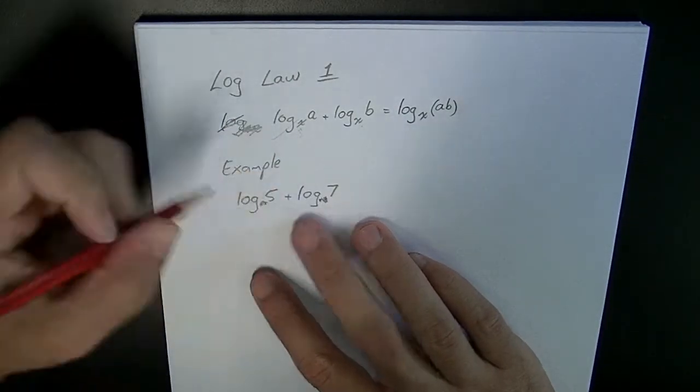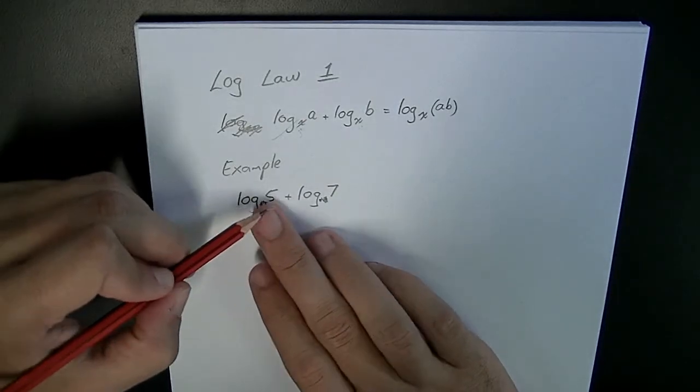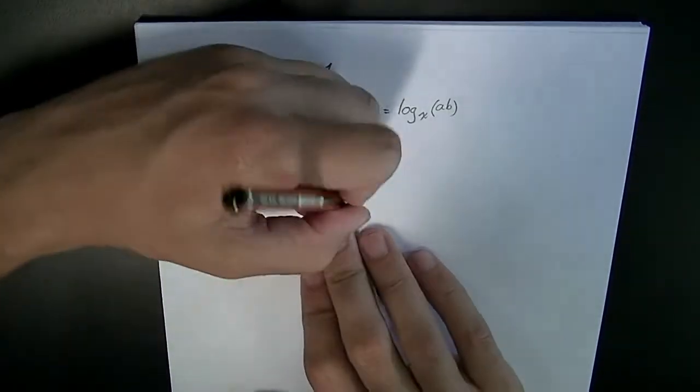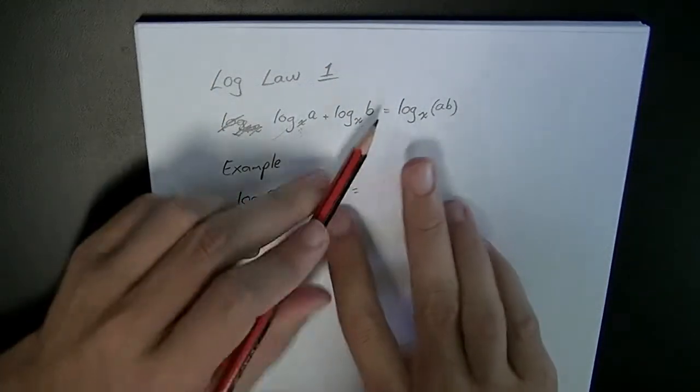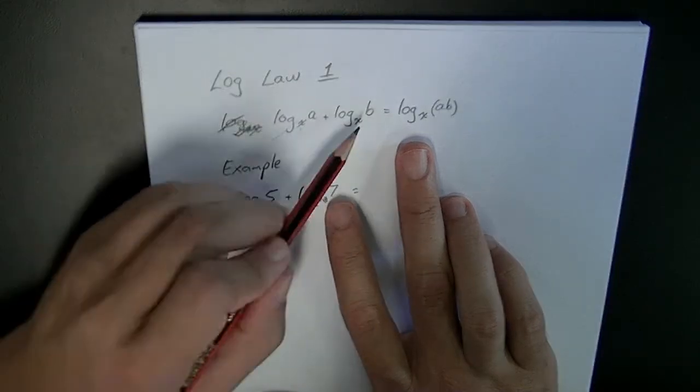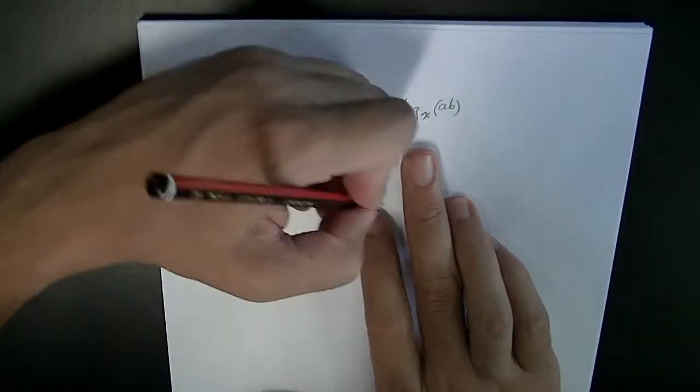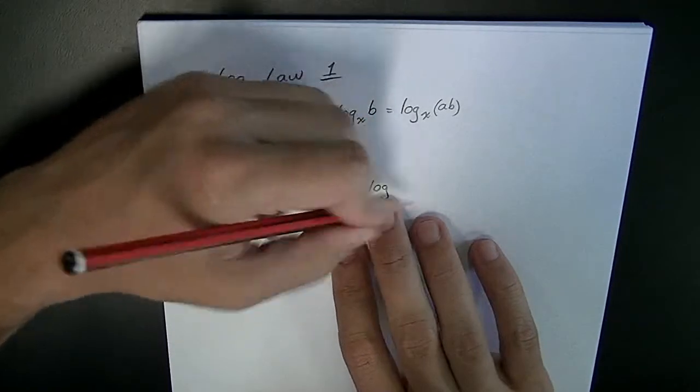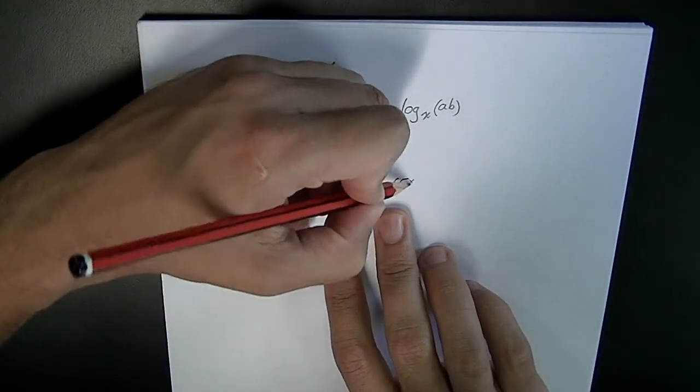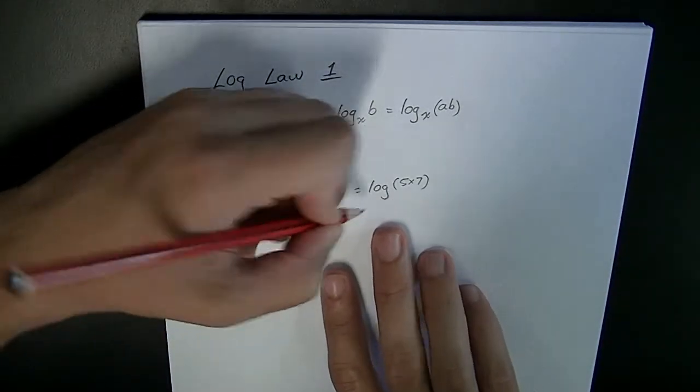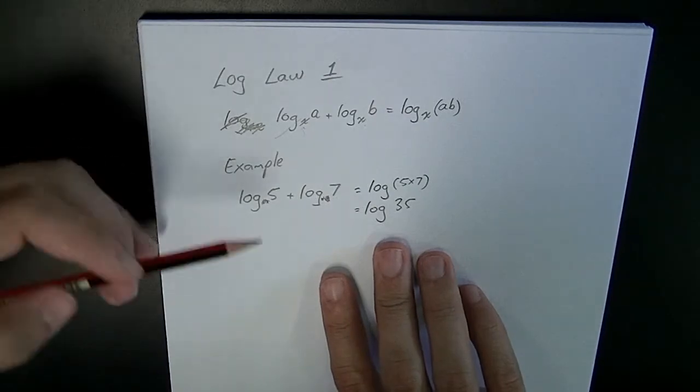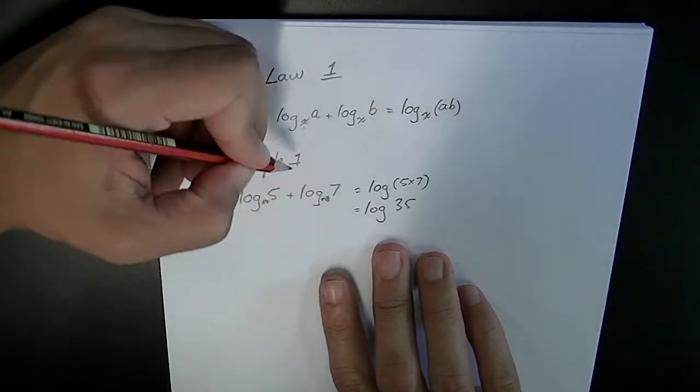So I'm not going to put the 10's in there. Log 5 plus log 7 equals, according to our law, something with the same base plus another thing with the same base is equal to log of 5 times 7, which equals log 35. So there's example 1.